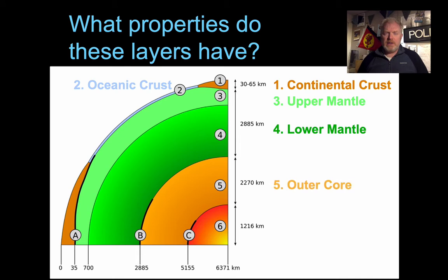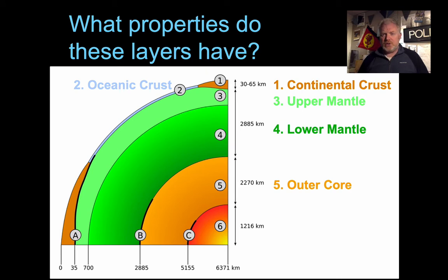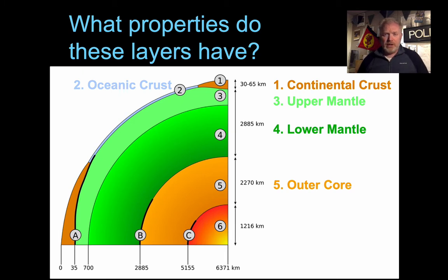Layer 5 is the outer core. The outer core is very different from the mantle — it's made of iron, mostly iron, with some nickel and probably some sulphur. There's a significant jump in density as we go from the mantle into the outer core. The density of the outer core is about 9.9 at its outermost edge, and at the base of the outer core it gets to about 12.2. So the density almost doubles as we go from the lower mantle into the outer core.